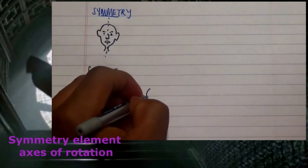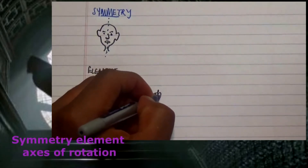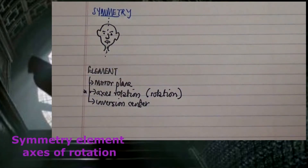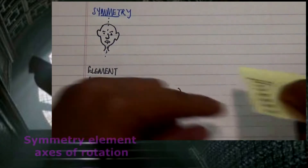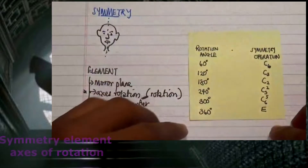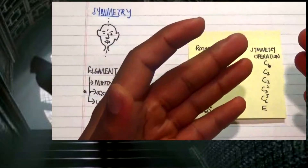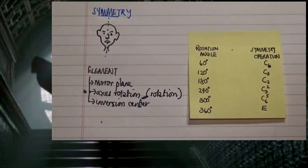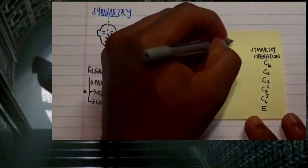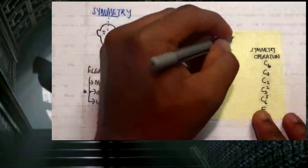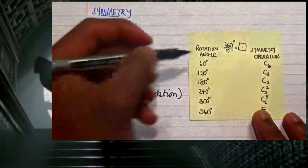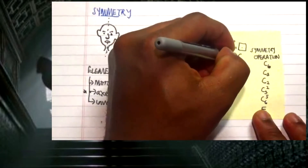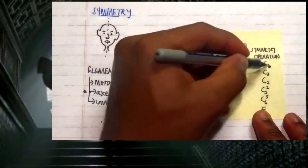The axis of rotation focuses on symmetry operations involving rotation. There are various interesting angles we're going to categorize. Here on this sticker note we have some rotation angles and their corresponding symmetry operations. These notations come from the formula: rotation angle = 360° divided by n, which gives the angle. If you put in the rotation angle, you get the n value, and the n value tells you the rotation operation, which is Cn. For example, where n = 6, you have a 60° rotation — a C6.